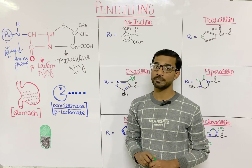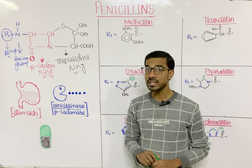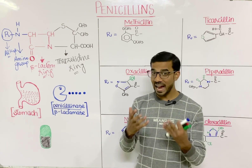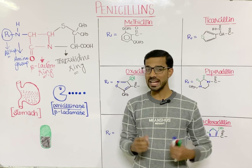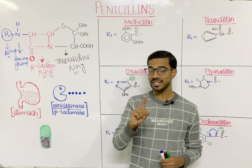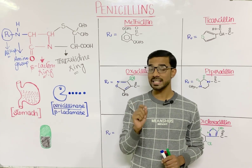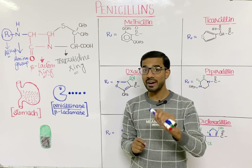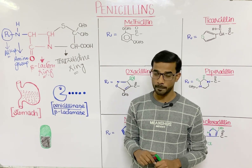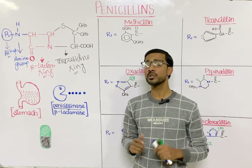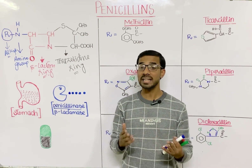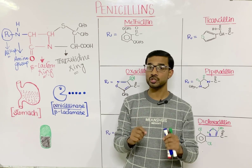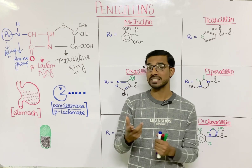Before moving to the different types of penicillin, we will look at two important susceptibilities. Penicillin faces two problems. First, when taken orally, stomach acid destroys the penicillin. Second, bacteria produce an enzyme — penicillinase, also called beta-lactamase — that inactivates or destroys the penicillin.